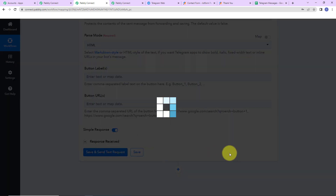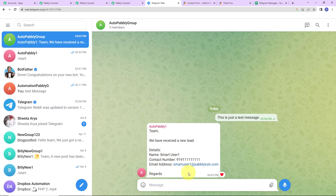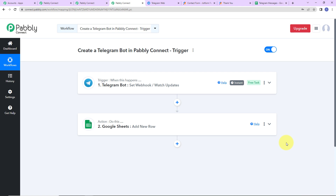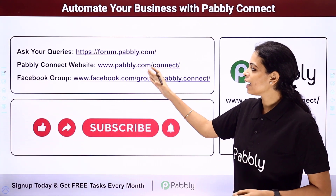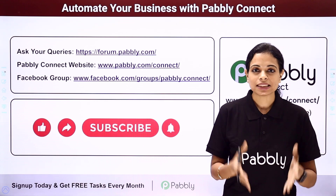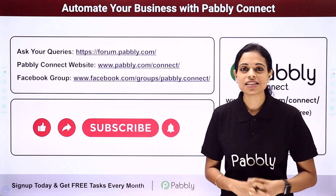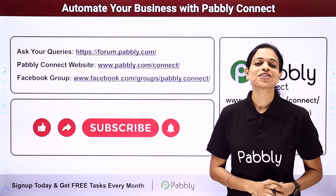I'm going to click on 'Save and Send Test Request,' and we have received the response — a message has been sent to Telegram. Our integration is a success. This is how you can create a Telegram bot in Pabbly Connect, covering both scenarios: Telegram as a trigger and as an action application. For any questions, write to us at forum.pabbly.com or visit www.pabbly.com. For the latest updates and integrations, visit our Facebook group. If you found this video helpful, share it with your friends and colleagues. Like, share, and subscribe — take care of yourself.